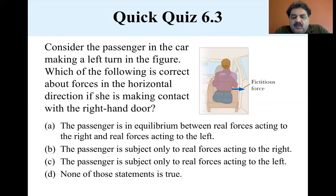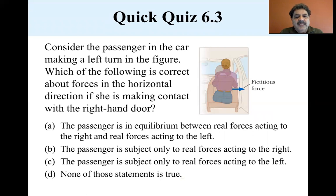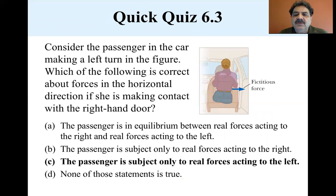Remember from the law of inertia, she was going to keep going straight. The only forces on her are the door and the friction of the seat keeping her moving. The answer is C — the passenger is subject only to real forces acting to the left.